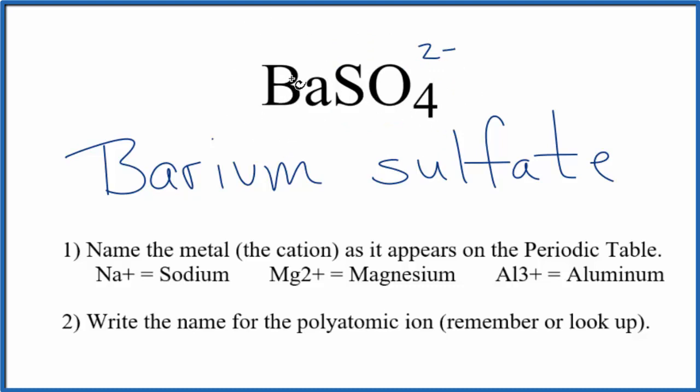Barium, that's in group 2 on the periodic table, it has a 2 plus ionic charge. Since these balance out, give us a net charge of zero, we only need 1 barium and 1 sulfate ion for barium sulfate.